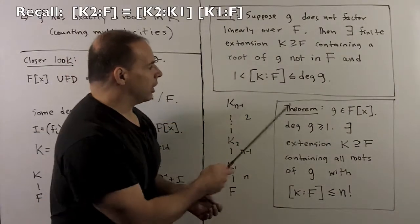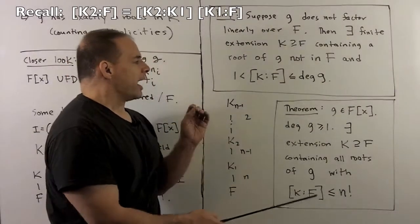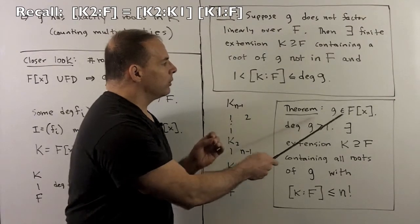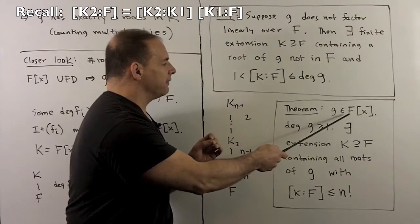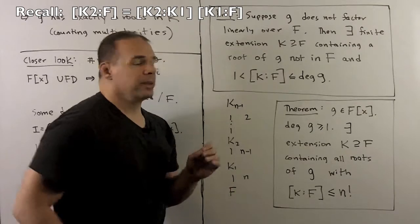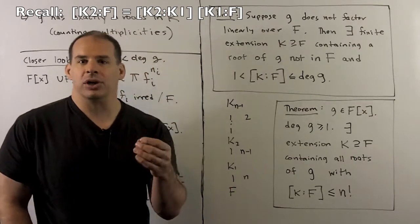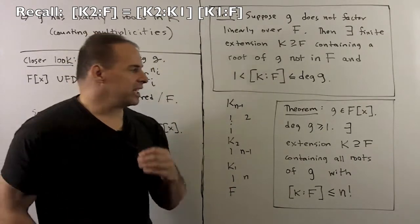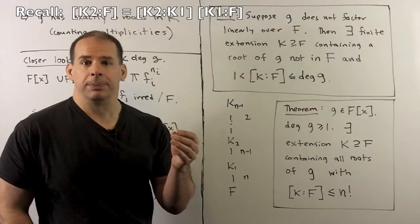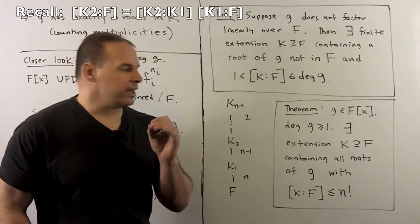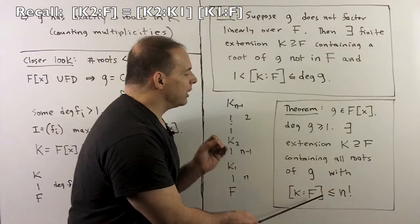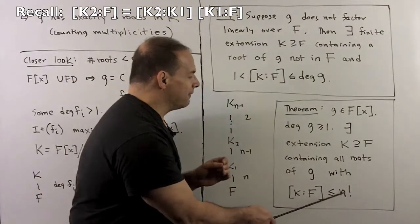That gives the theorem: if g is a polynomial with coefficients in f with degree of g greater than or equal to 1, then there exists an extension k of f containing all the roots of g, with the degree of k over f less than or equal to n factorial.